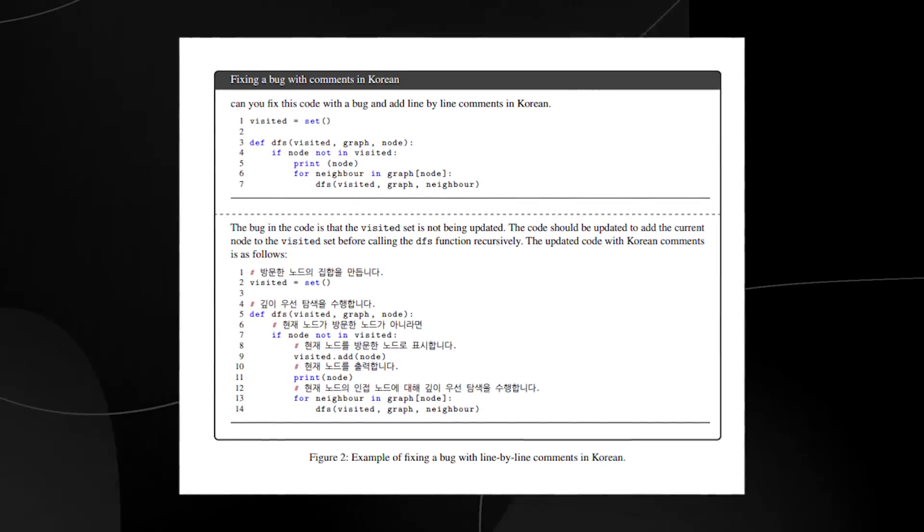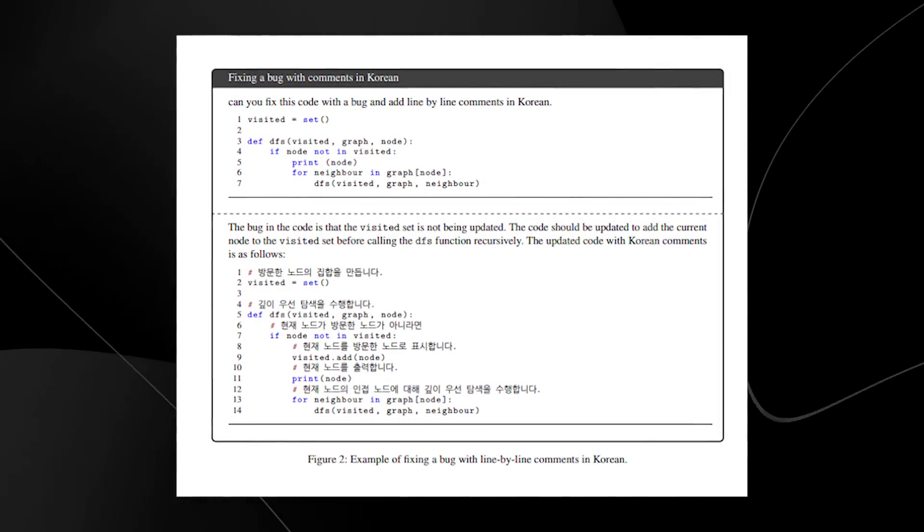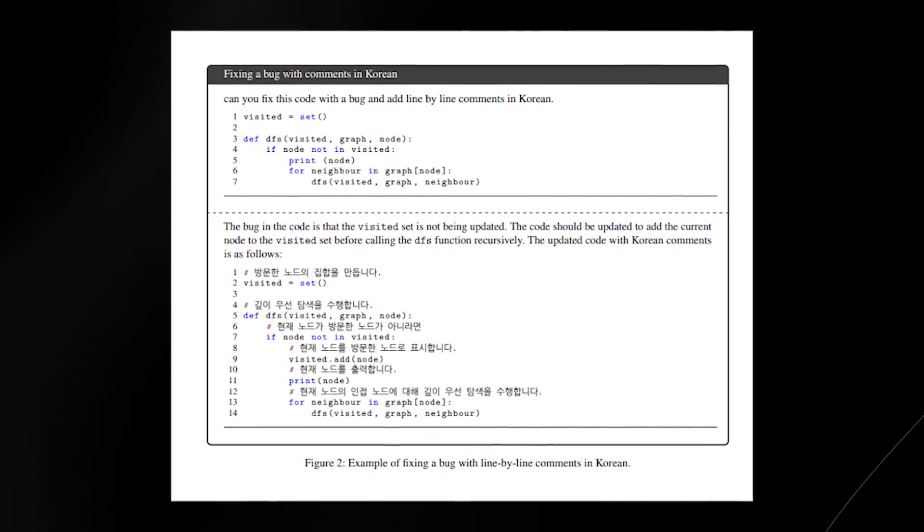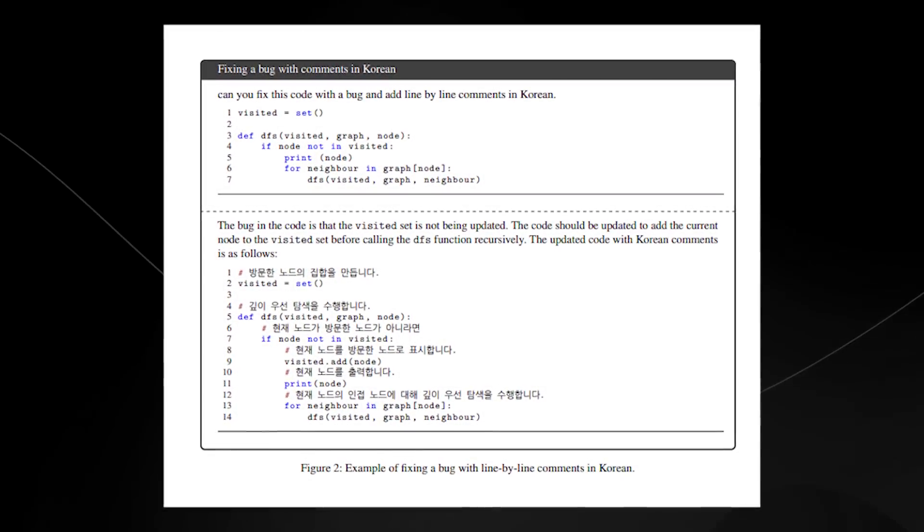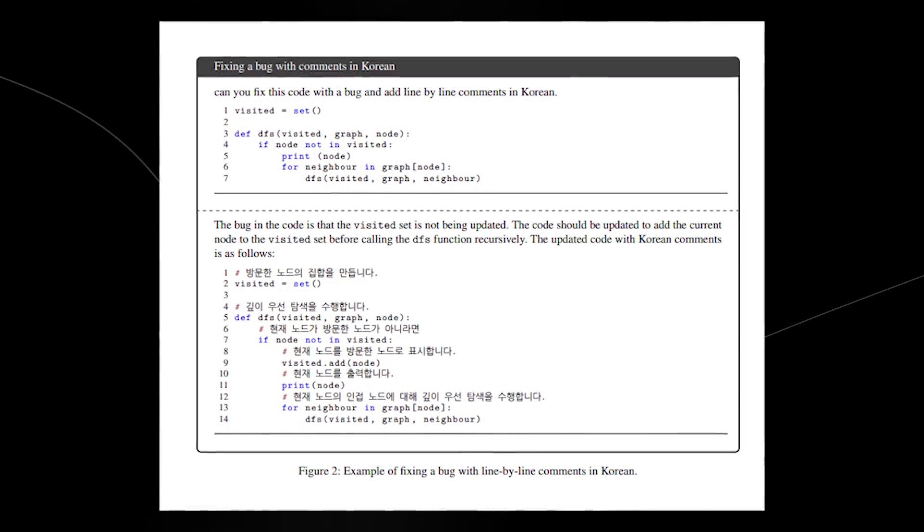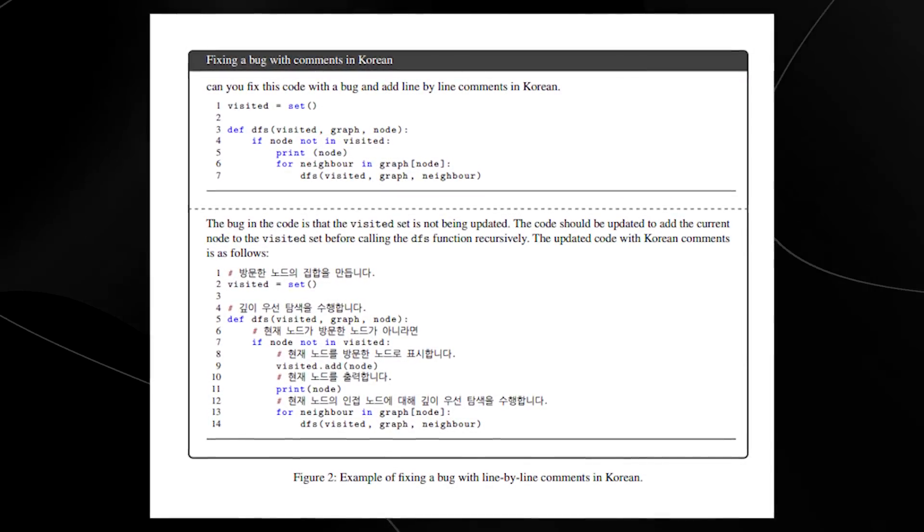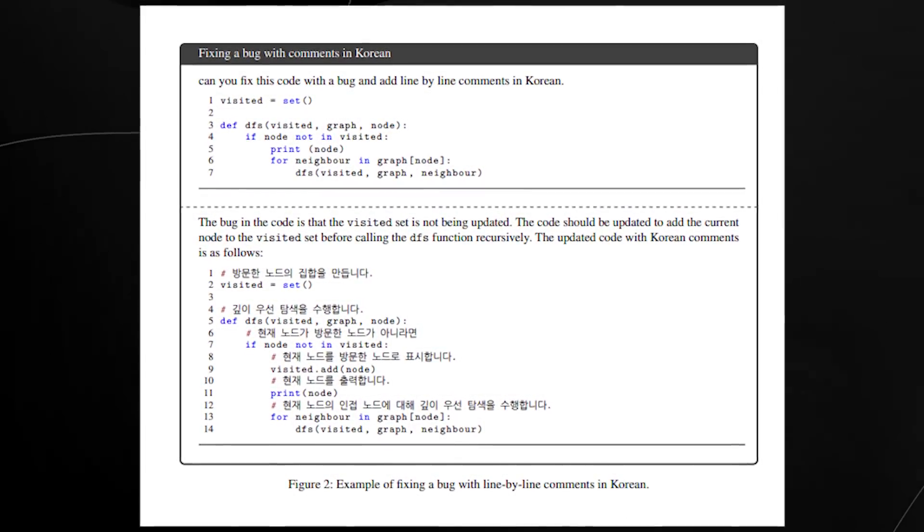If you're wondering how powerful Palm is when converting different languages and translating them, you can see here an excerpt from the research paper that Google produced. It talks about how you can fix a bug with comments in Korean. The code is in English, and then someone said fix a bug and add these comments in Korean.